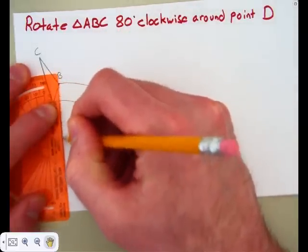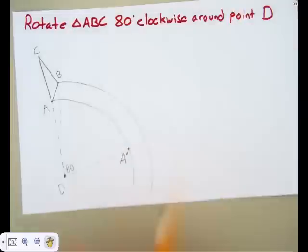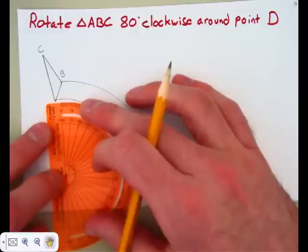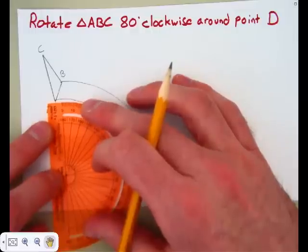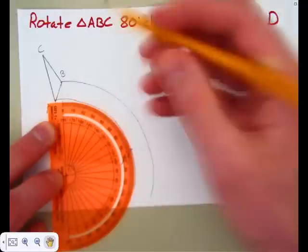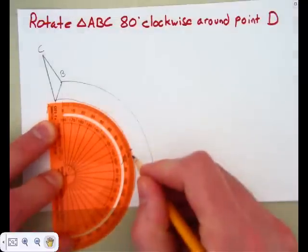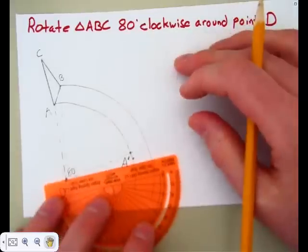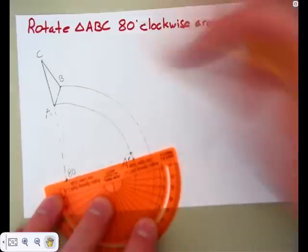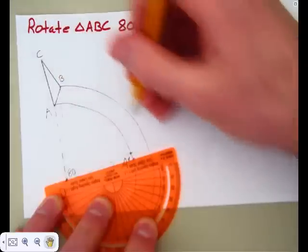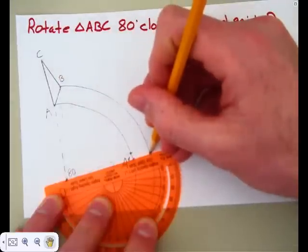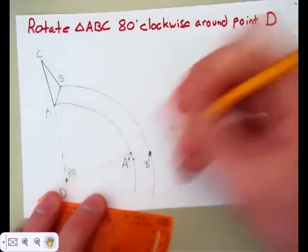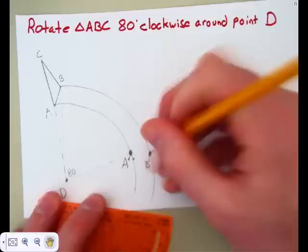So I'm just going to use that dashed line again, very lightly. It's not really part of the drawing, but I just need to see it. So vertex of the protractor at point D, zero degree mark lined up with that little dashed line I just drew. 80 degrees is right there. I'm going to set the straight edge here at D and that tick mark. Point B is following this path, so I've got to put my mark right there. That is where point B prime is going to be.